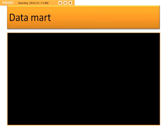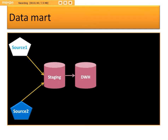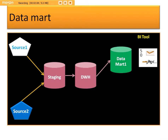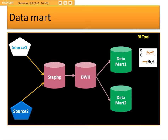So where does the data warehouse fit in? From Source 1 and Source 2, the data will be moved to staging using an ETL tool. From staging, the data will be moved to the data warehouse. On top of the data warehouse, data marts will be built. Data warehouse 1 will be used for certain kinds of reports, and data warehouse 2 will be formed on top of the data warehouse for specific reporting purposes.